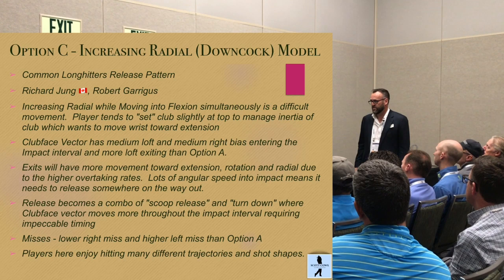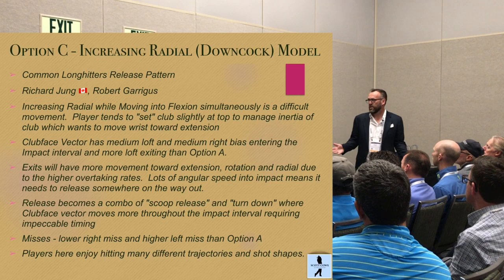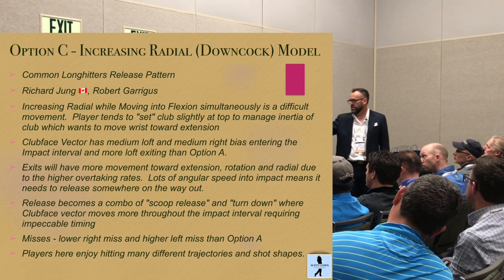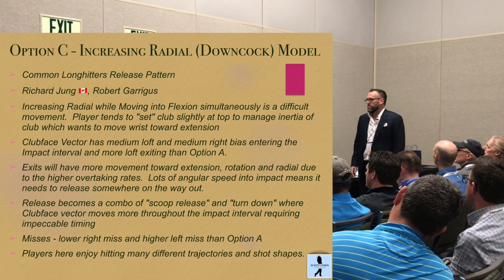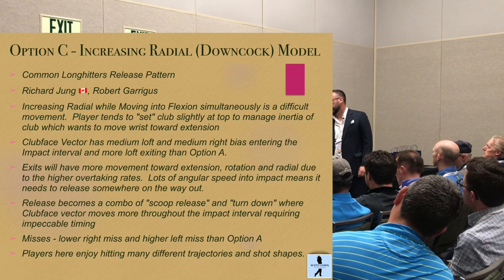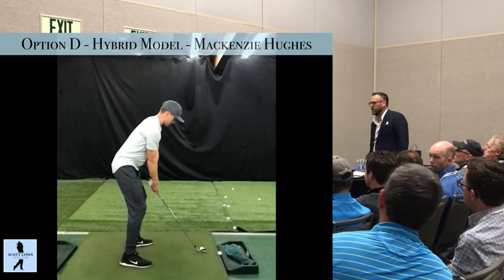The clubface vector has medium loft and medium right bias entering the impact interval, and a little bit more loft exiting than option A. That face vector has to go somewhere. Exits will have more movement toward extension-rotation-radial due to the higher overtaking rates. Lots of angular speed into impact means it needs to release somewhere. These players tend to hit stingers really well — a player that likes to down-cock it likes to hit those trappy little missiles, hit different trajectories and different shot shapes.